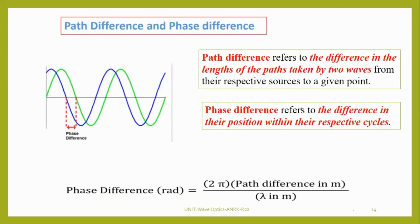The path difference and phase difference. Path difference refers to the difference in the length of the path taken by two waves. Phase difference refers to the difference in their position within their respective cycle. Using this formula: phase difference equals 2π times path difference divided by wavelength.